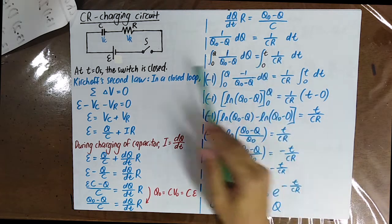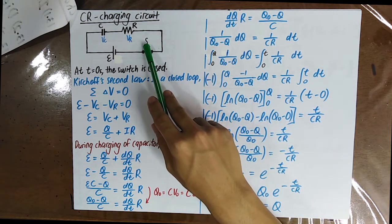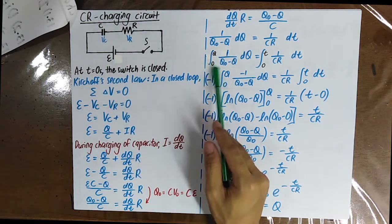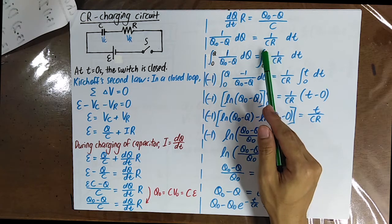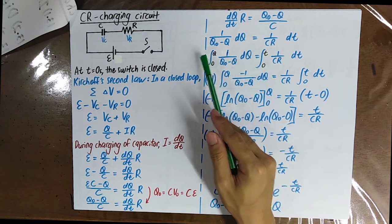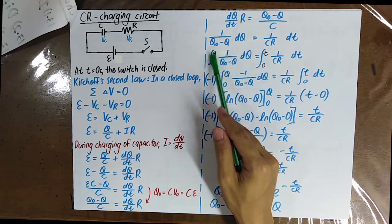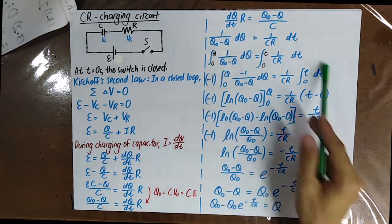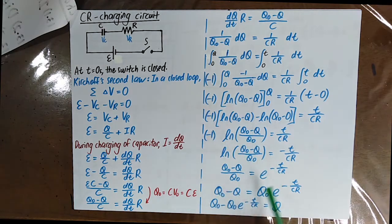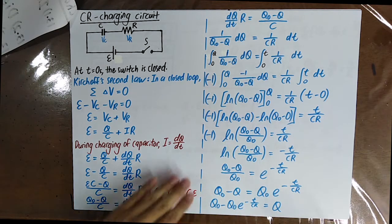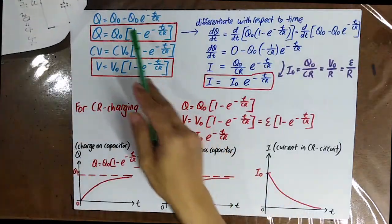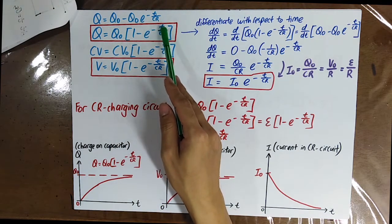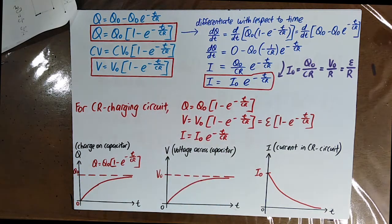When time equals zero — that is, when the switch is just being closed — the amount of charge on the capacitor is zero. At a variable time T, the amount of charge stored is an unknown charge Q. By this integration, you can finally get the formula: Q equals Q0 bracket 1 minus e to the power of negative T over CR.